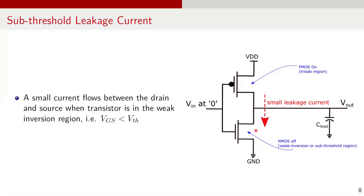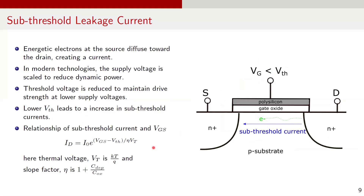Therefore, when the NMOS is in the weak inversion region, there is a direct path from VDD to ground, leading to leakage power consumption. In the weak inversion region, there is no gate-induced electric field, but there is a small longitudinal field under the gate due to drain voltage. This allows some energetic electrons at the source to enter the channel and diffuse towards the drain, creating a small leakage current.